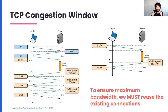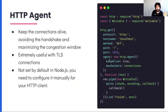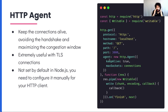In order to ensure maximum bandwidth and minimum latency, we must reuse existing connections. In Node Core, we offer a construct to do this, which is creating an HTTP agent. HTTP agents keep the connection alive, so it avoids the handshake and maximizes the congestion window. It uses the HTTP 1.1 keep-alive — a key feature of HTTP 1.1.